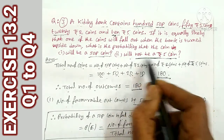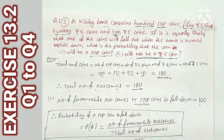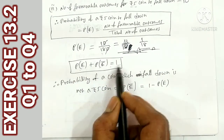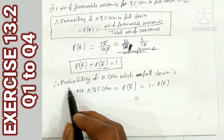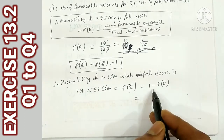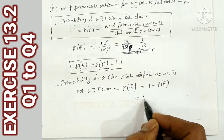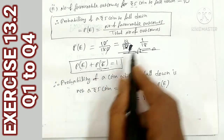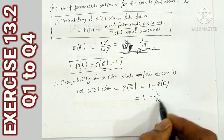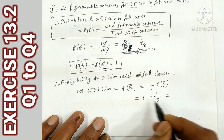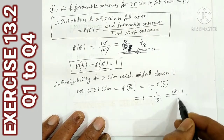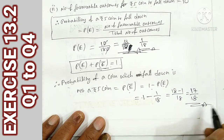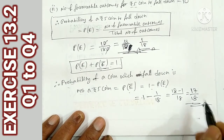Now, what is the probability of not getting a 5 rupee coin? Using the formula: P(not E) = 1 minus P(E) = 1 minus 1/18 = (18 minus 1)/18 = 17/18. That is the probability of not getting a 5 rupees coin.